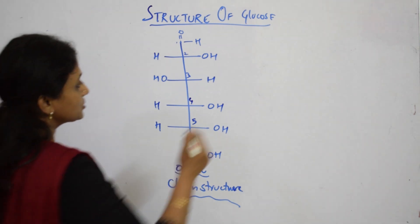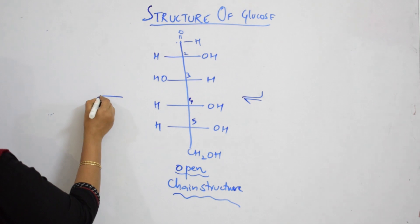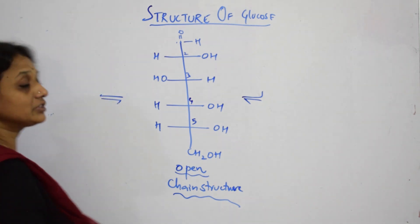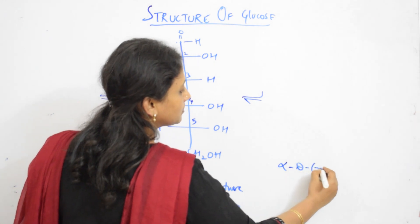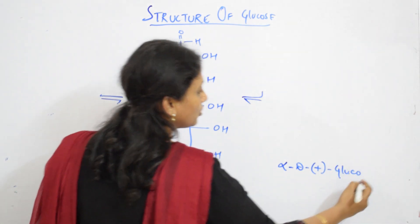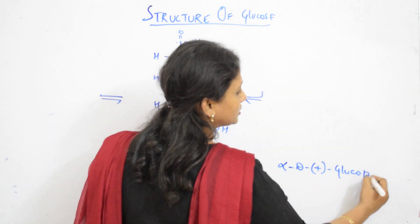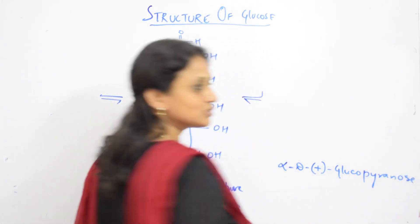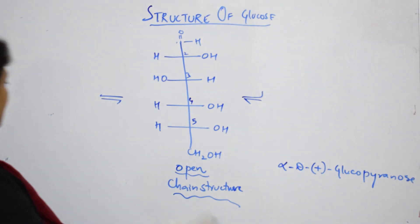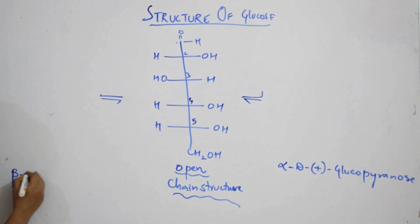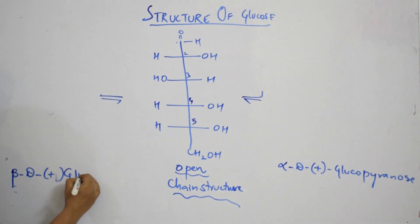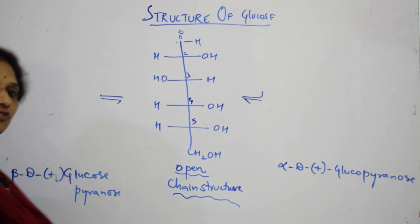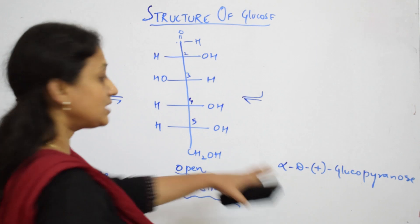This open chain structure is in equilibrium with two forms. One is your alpha-D-glucopyranose — a six-membered cyclic structure — and it also forms beta-D-glucopyranose. So glucose exists in both alpha form and beta form.